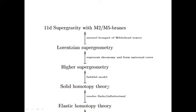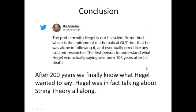When we have a faithful model to embed it in higher supergeometry. And then we present rheonomy and form a universal cover to get Lorentzian supergeometry. And finally we unravel the bouquet of Whitehead towers to get 11 dimensional supergravity with M2, M5 branes. And that's the string theory we love. We always want to have string theory in 11 dimensions with supergravity. That's what we want.